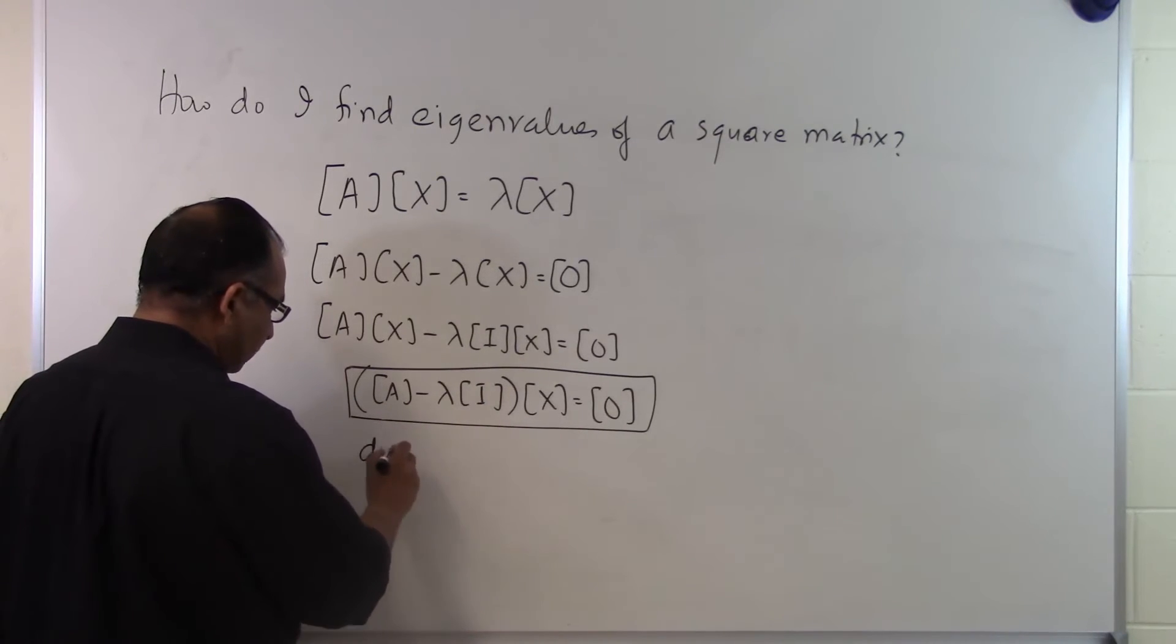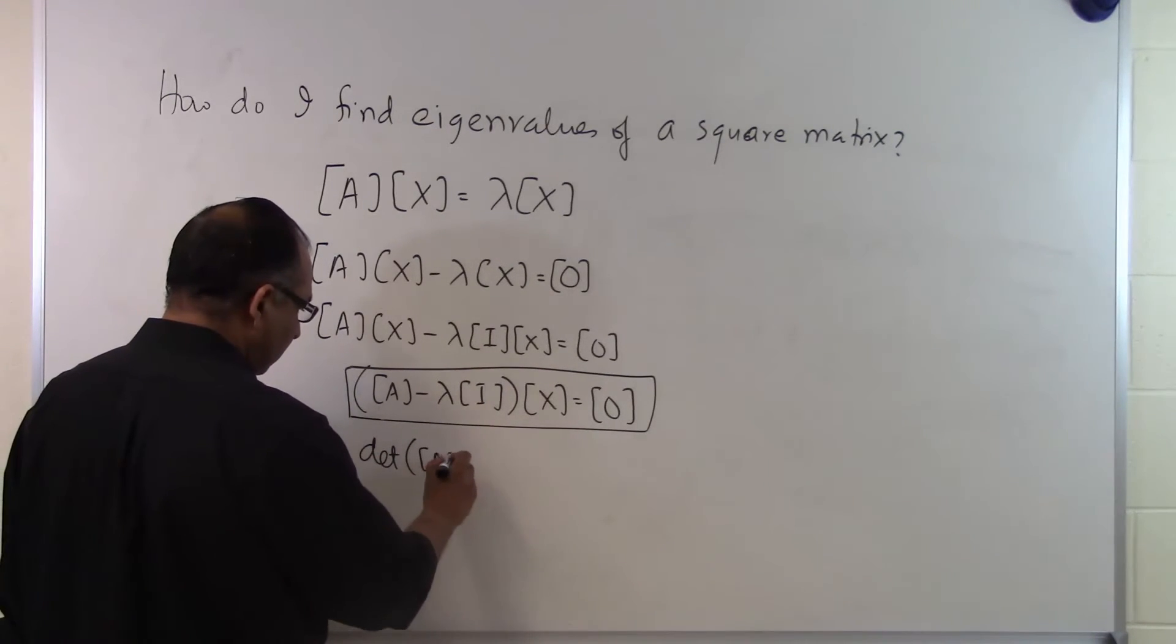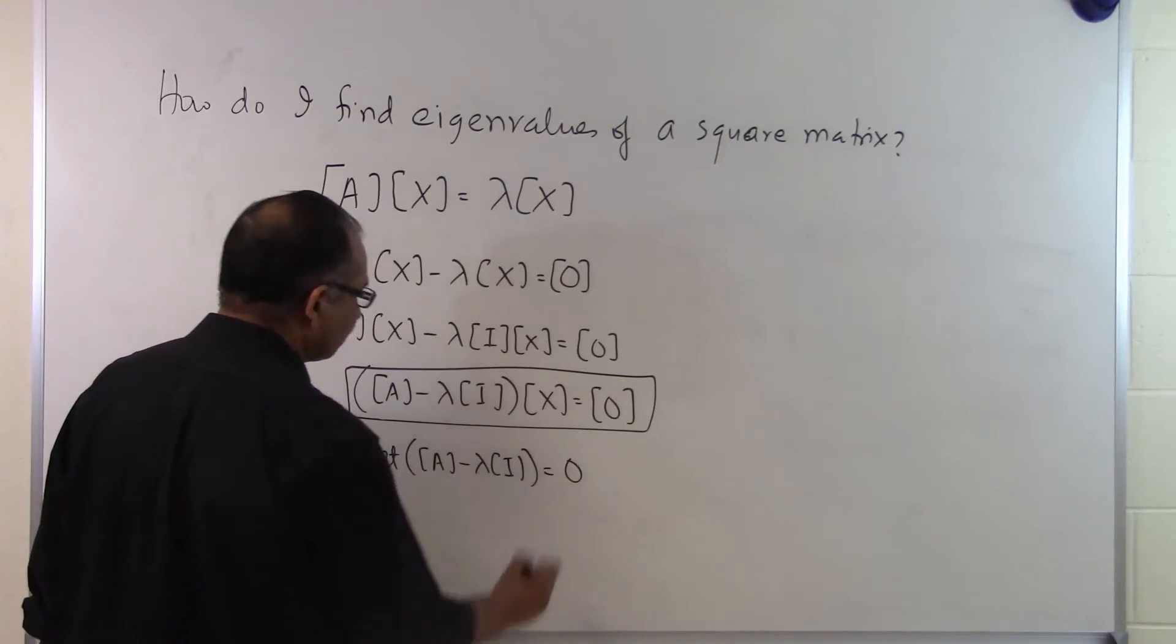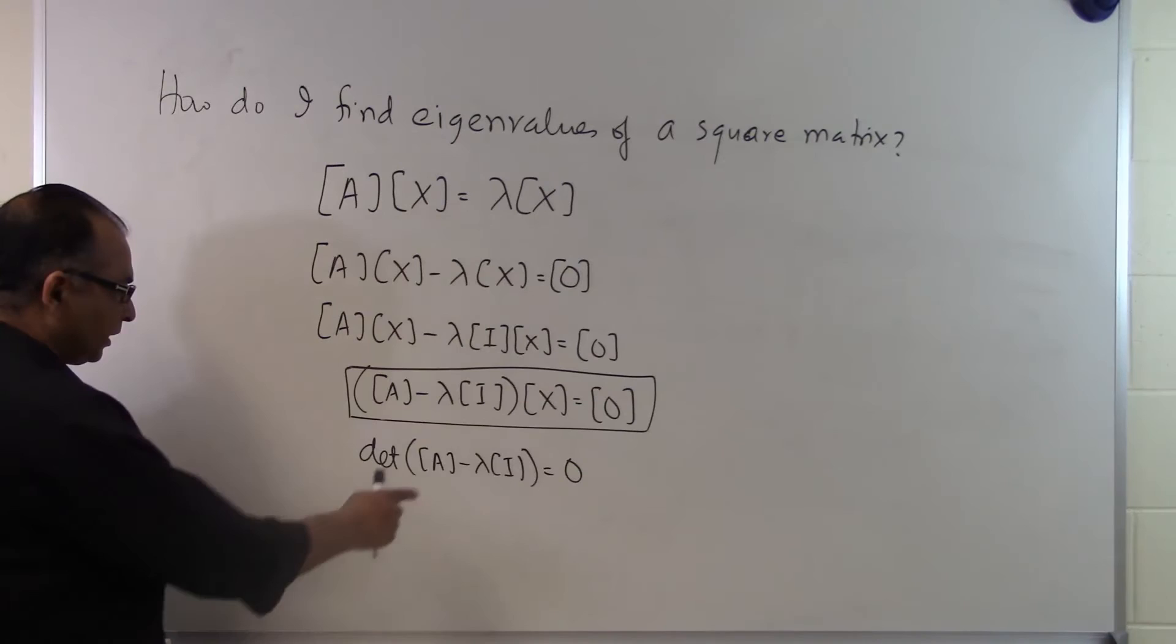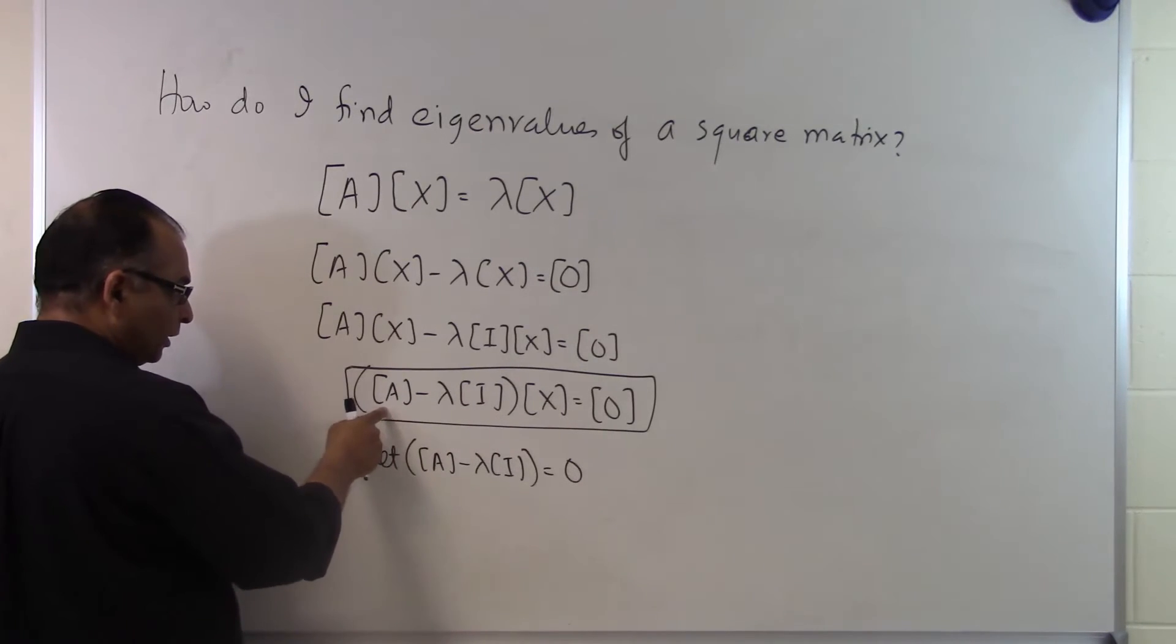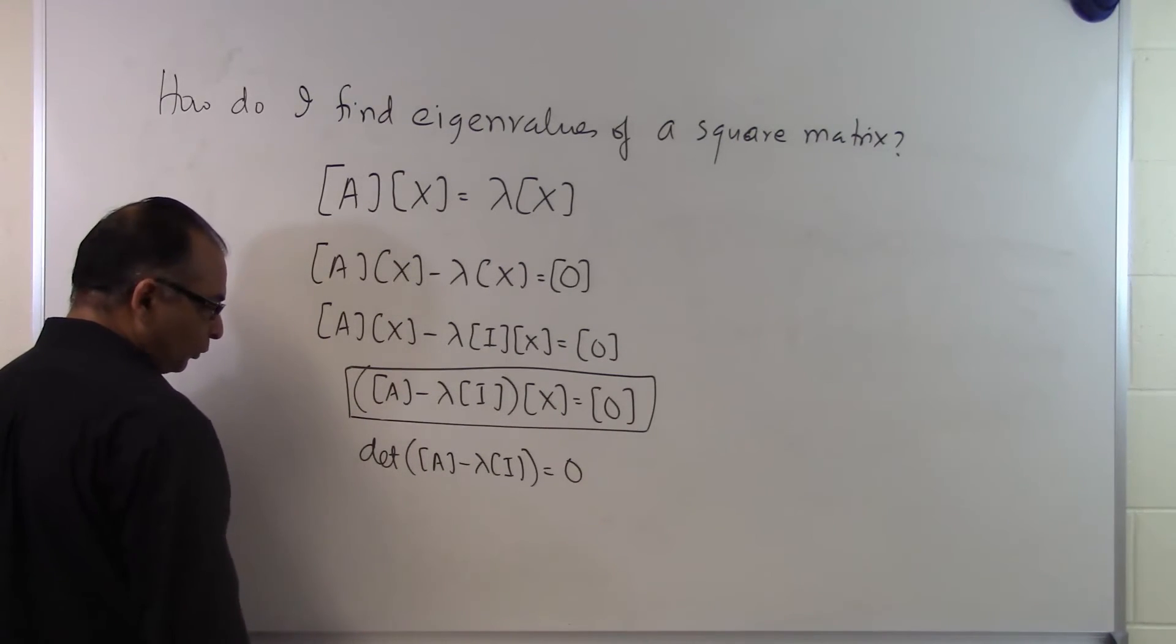So the determinant of A minus lambda I will have to be zero. What that means is that this matrix A minus lambda I has zero determinant, means that it is singular, means that it doesn't have an inverse, and that's how we are going to be able to find lambda.